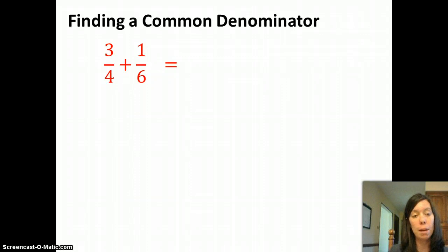So this is the example at the bottom of your page, 3/4 plus 1/6. We can't add these together yet because they have different denominators. So to find a common denominator, we look for a number that both 4 and 6, both of our denominators, go into evenly.